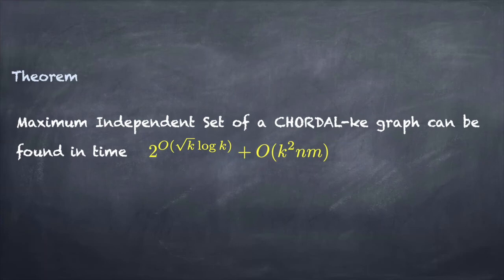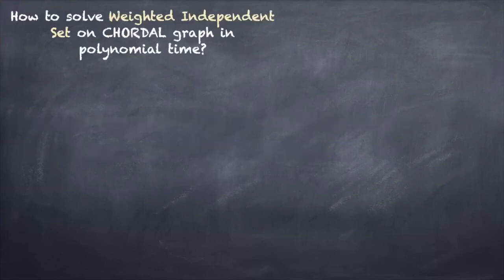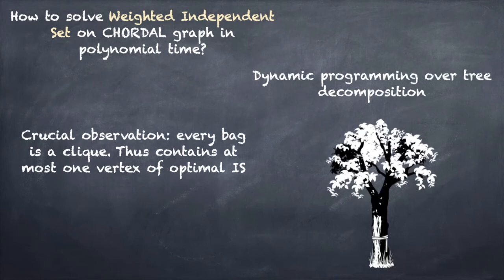But first, this theorem implies that on chordal graphs maximum independent set is solvable in polynomial time. So how to do it? The approach for solving weighted independent set on chordal graphs is based on performing dynamic programming on a clique tree. A clique tree is a tree decomposition with every bag being a clique, and it's well known that chordal graphs always have a clique tree. Since every bag is a clique it contains at most one vertex of any independent set. Using this we can do dynamic programming over the clique tree starting from leaves. The time of dynamic programming is proportional to the number of states which is basically the different ways independent set can overlap with the bag, which is polynomial.